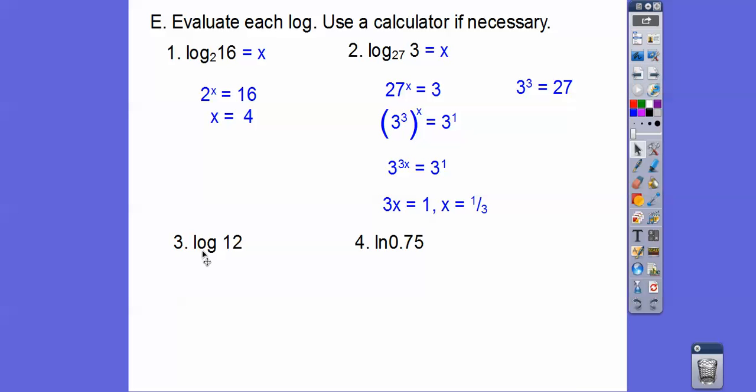Here we have to use our calculator, so punch in log 12. Some calculators you got to do 12 and then hit log. Either log 12 or 12 log. Over here, same thing, natural log of 0.75 or 0.75 natural log, depending on your calculator. You should get about those values right there.